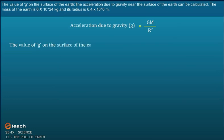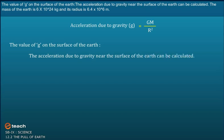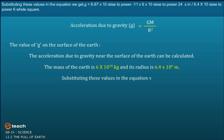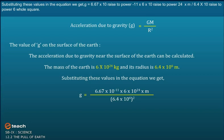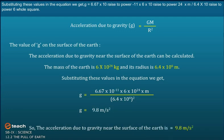The value of g on the surface of the Earth can be calculated. The mass of the Earth is 6 × 10²⁴ kg and its radius is 6.4 × 10⁶ m. Substituting these values in the equation, we get g = (6.67 × 10⁻¹¹ × 6 × 10²⁴) / (6.4 × 10⁶)². The acceleration due to gravity near the surface of the Earth is 9.8 m/s².